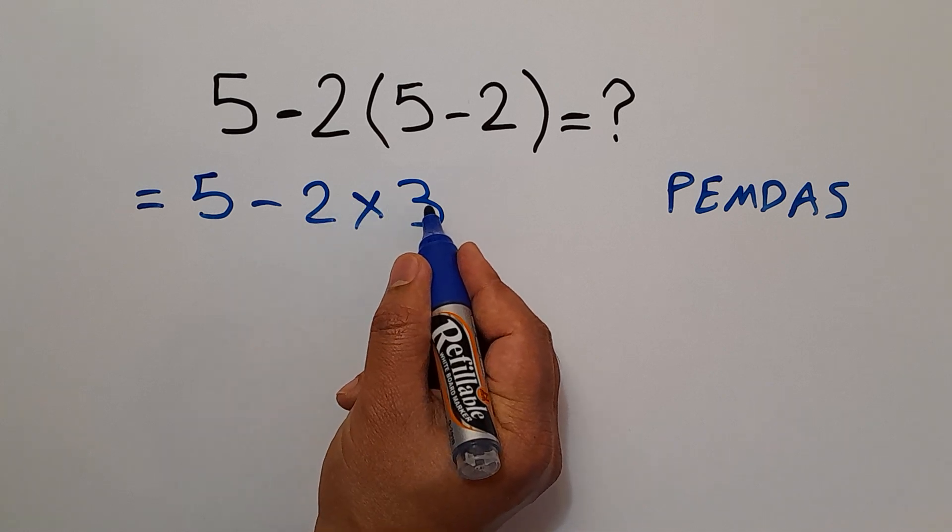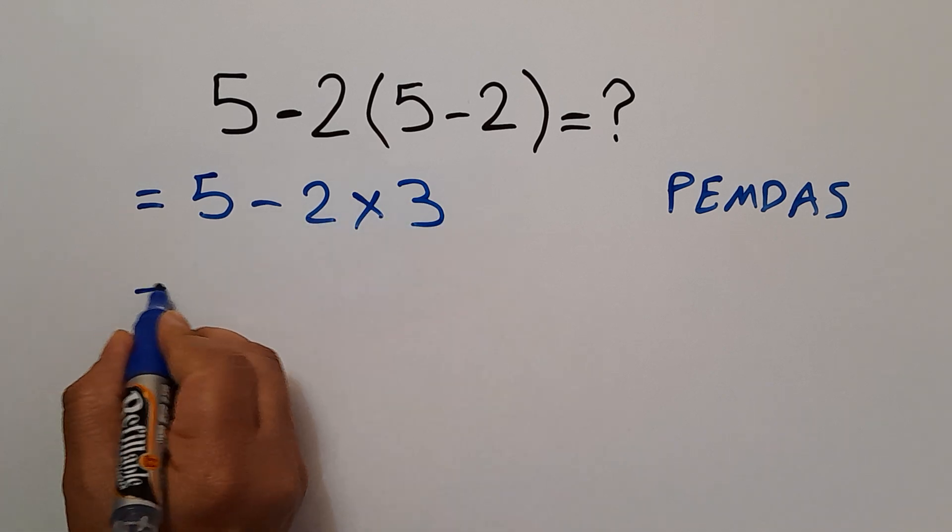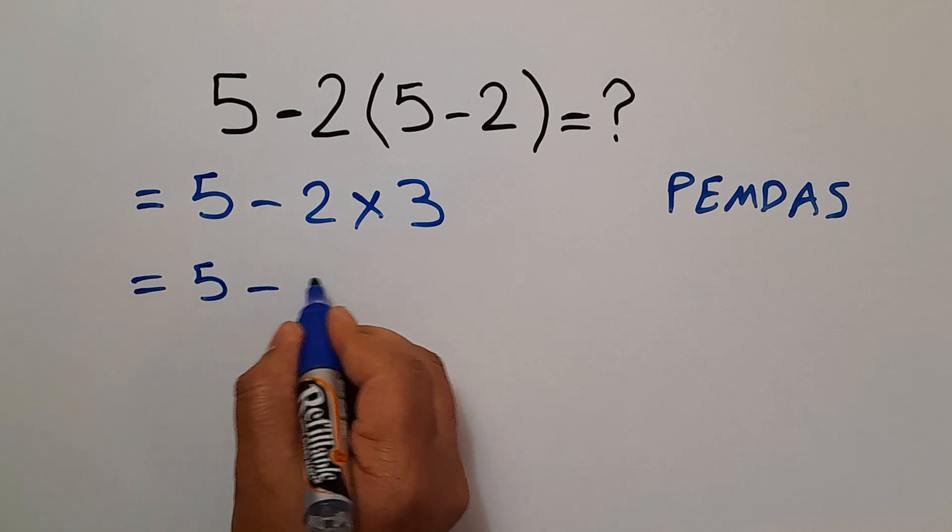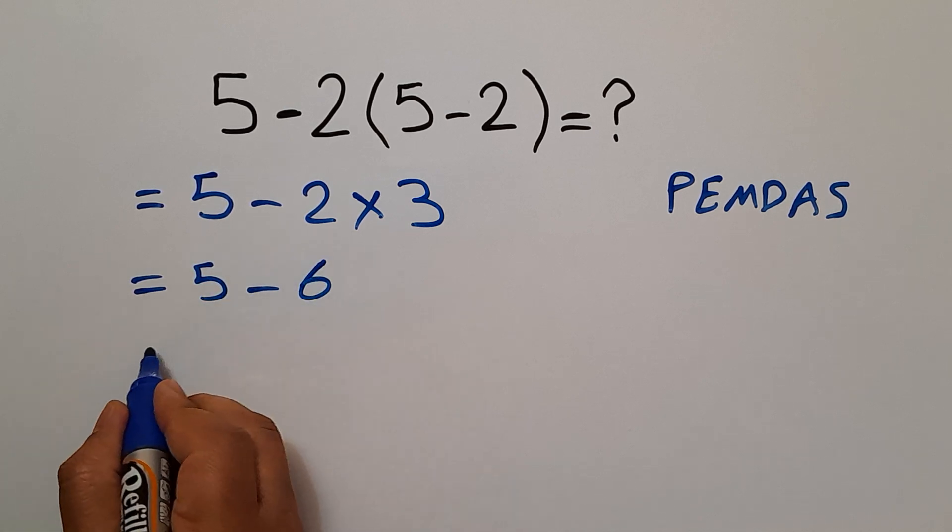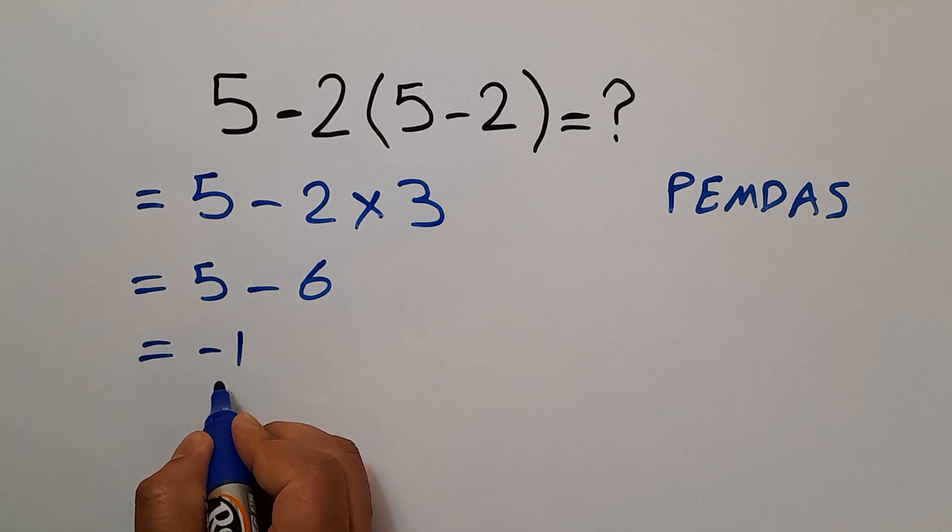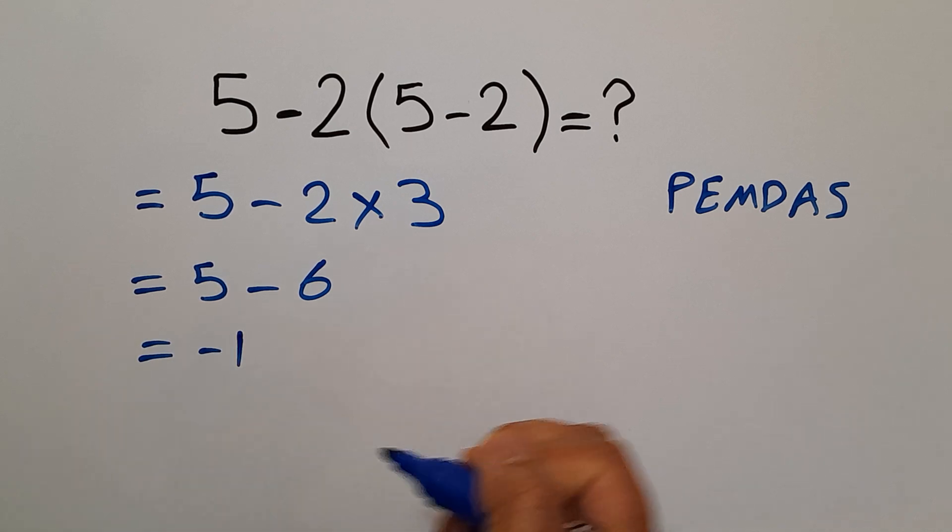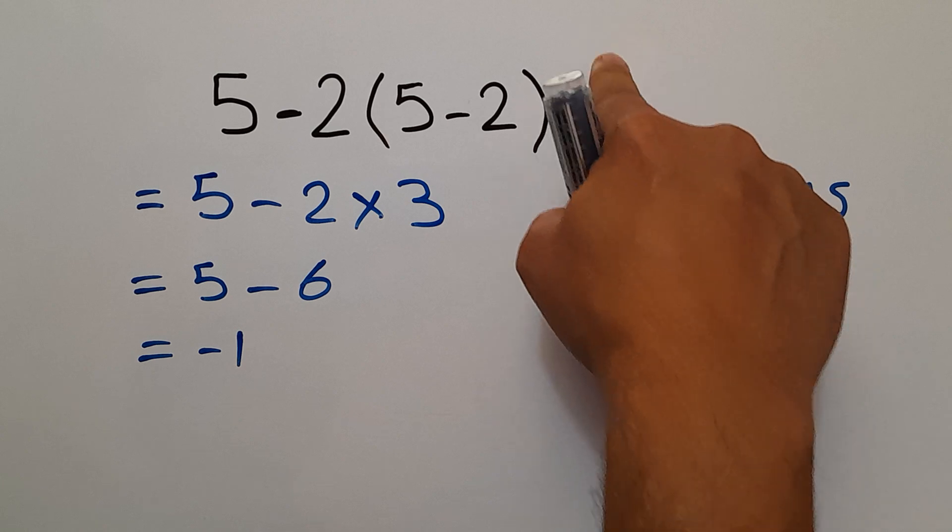2 times 3 equals 6. So 5 minus 6. And 5 minus 6 gives us negative 1. So our final answer to this problem is negative 1.